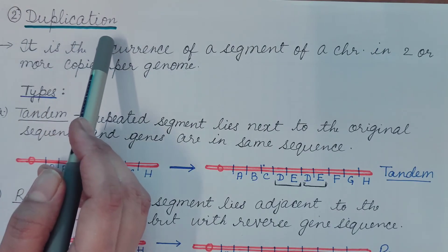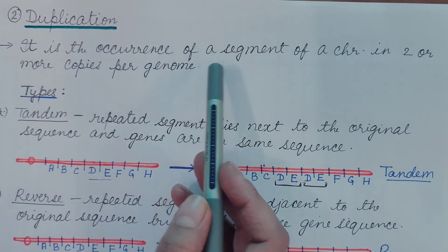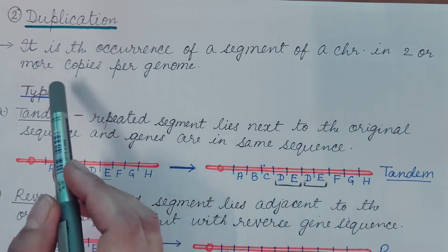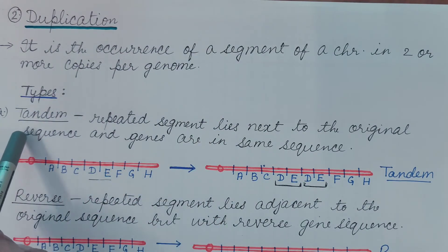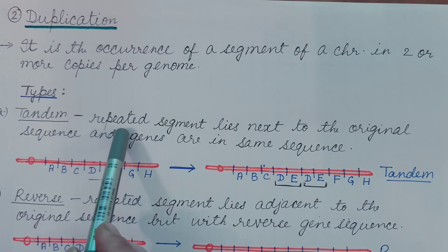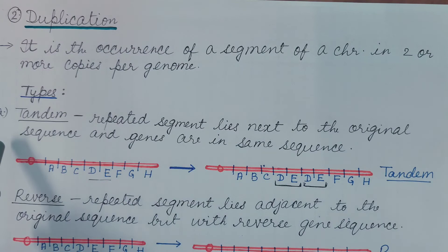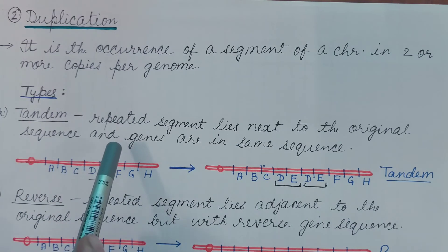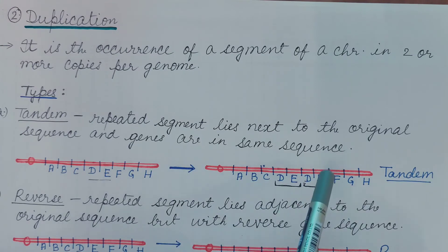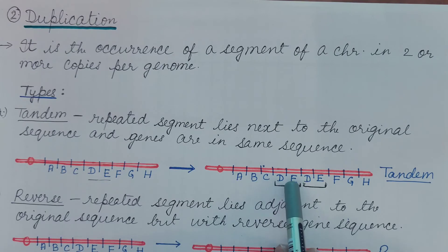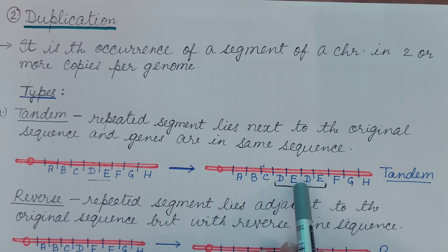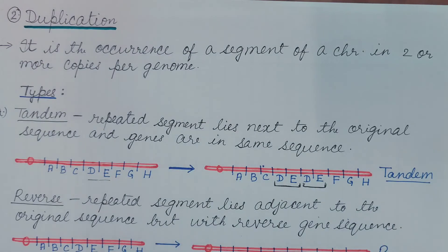The second type of chromosomal aberration is duplication — the occurrence of a segment of chromosome in two or more copies per genome. Types of duplication: Tandem duplication is when the repeated segment lies next to the original sequence and genes are in the same sequence. For example, the original segment has sequence DE, and the duplicated segment is present adjacent to the original in the same sequence — DE DE. This is known as tandem duplication.